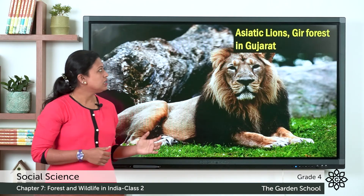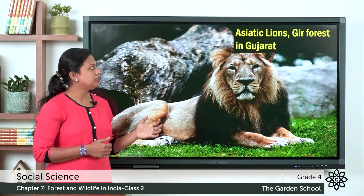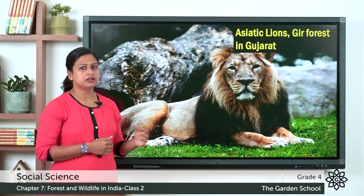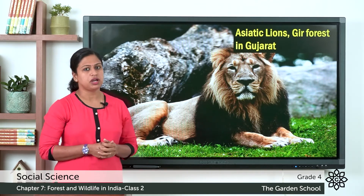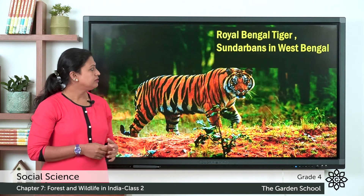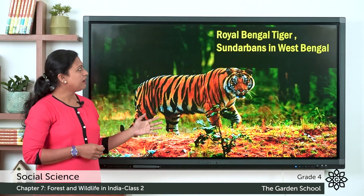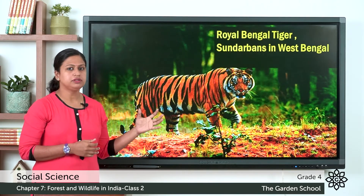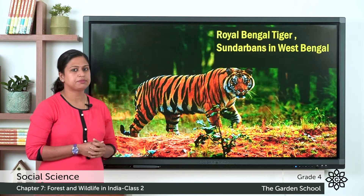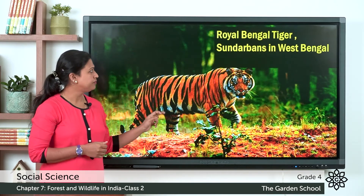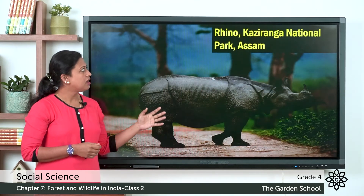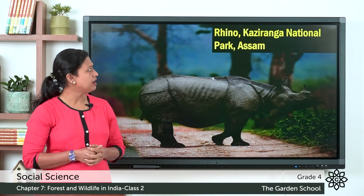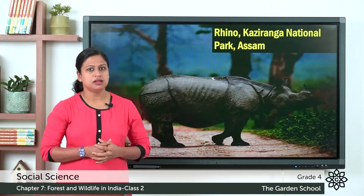This is the picture of the Asiatic lion. We can find them in Gir forest in Gujarat. Then we have the Royal Bengal tiger which is found in Sundarbans in West Bengal. This is the rhino which is found in Kaziranga National Park, Assam.